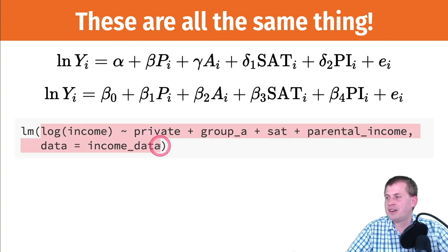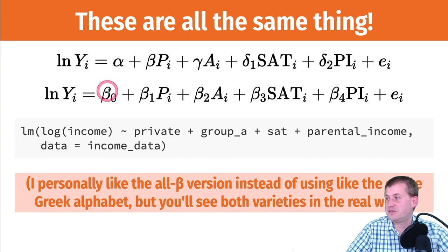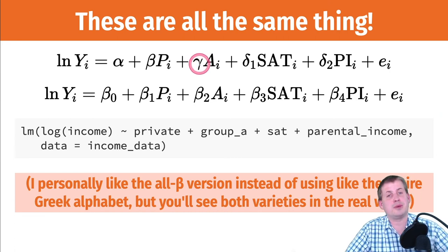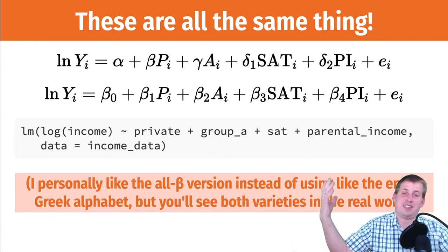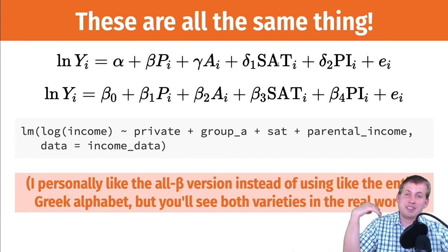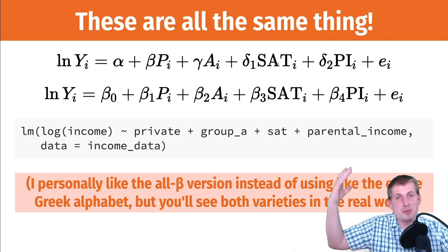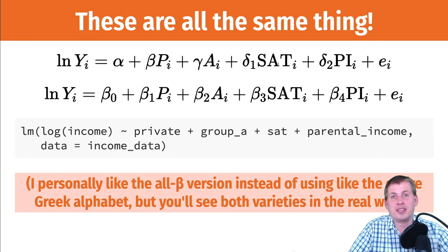You can either use the economist convention of distinguishing alpha, beta, gamma, delta — or just call them all betas with numbers: beta-0, beta-1, beta-2, beta-3. In R it's all the same thing. I personally prefer the beta version with numbers instead of trying to remember what gamma or delta means in a given paper, especially since it's not consistent across studies. When you see lots of Greek letters in readings, just translate them all to betas — they're all just slopes, all coefficients in a regression model.